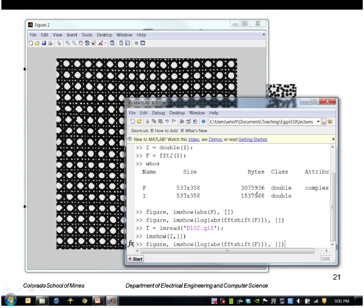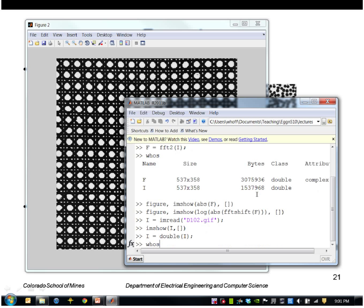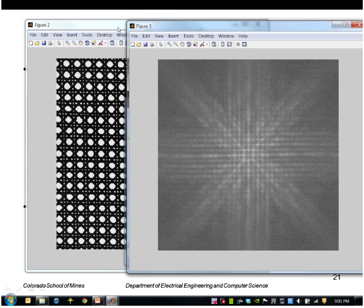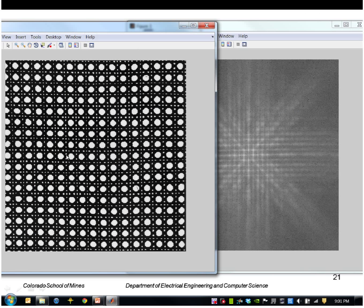I'll do the same operations I did before, namely convert it to double, take the Fourier transform of that, and then display the transform. So you can see a very periodic pattern that represents the periodicity of this spatial image horizontally, vertically, and diagonally.